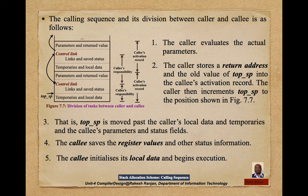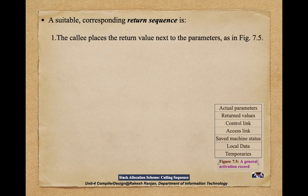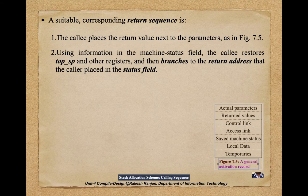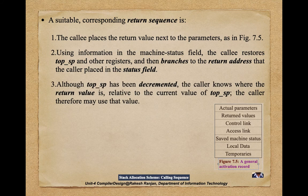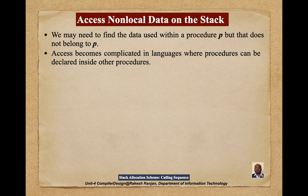For the return sequence, the callee places the return value next to the parameters. Using the machine status field, the callee restores top_sp and other registers, then branches to the return address. Although top_sp has been decremented, the caller knows where the return value is relative to the current value of top_sp and may use that value.